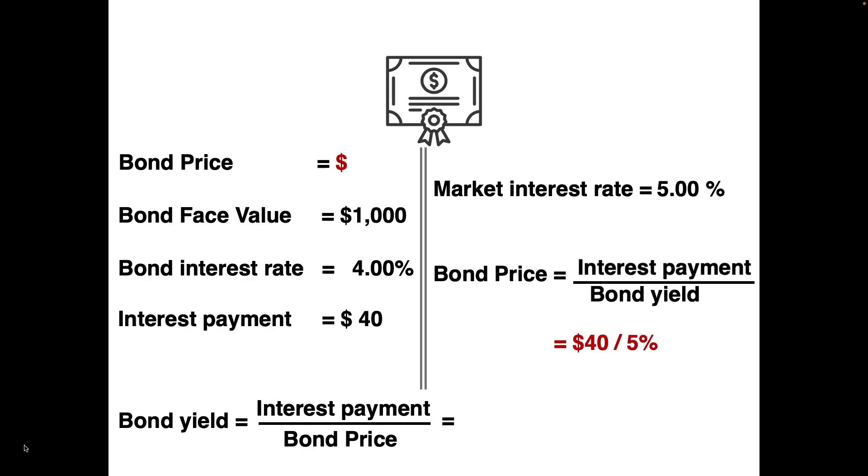If we divide the $40 interest payment by the market interest rate of 5%, which equals the bond yield, we get a bond price of $800. At this price, you will collect a yield equal to the market interest rate, so there's no reason not to purchase the bond.